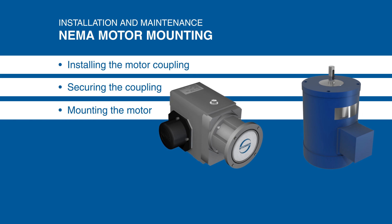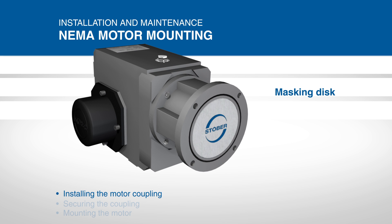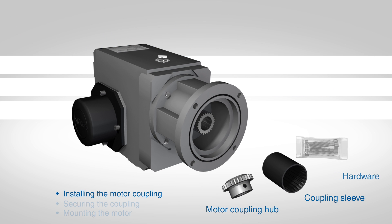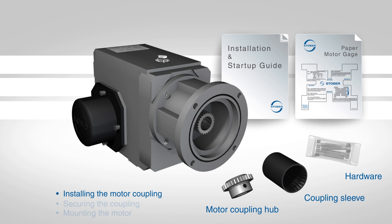Parts for mounting the motor can be found inside the masking disc of the reducer's input. Shipped with your reducer is the motor coupling, four stainless steel motor bolts, mounting instructions, and the paper motor hub mounting gauge.